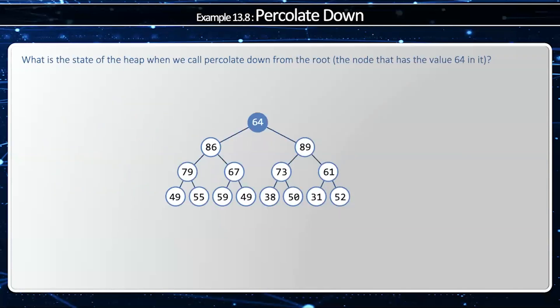One final example. We'll call percolate down on the node with 64. I'm going to compare the two children. It looks like 89 is bigger, so I'm going to swap it. Now I'm going to call percolate down on the node with 64. It looks like 73 is bigger, so I'll swap it. And then I'm going to call percolate down on its two children. It looks like 64 is greater than 38 or 59, so I'll stop.